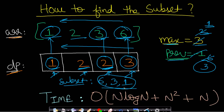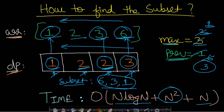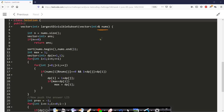The time complexity: sorting is O(n log n). Applying the dynamic programming step is O(n²). Finding the subset via single traversal is O(n). The total time complexity is O(n²). Let us now look at the code. Given the nums array, we sort it (step one). Then we find the longest increasing subsequence (step two).